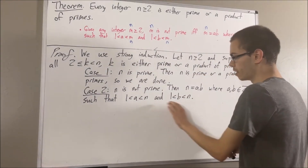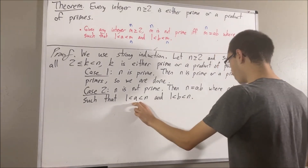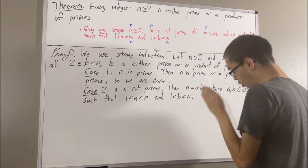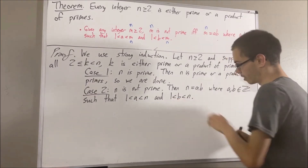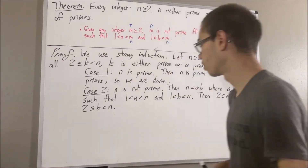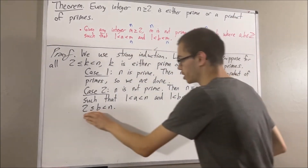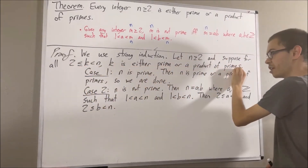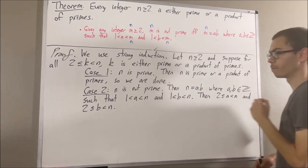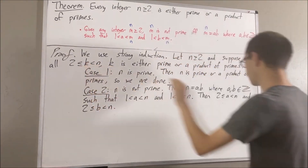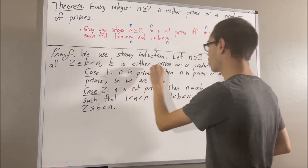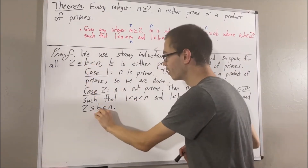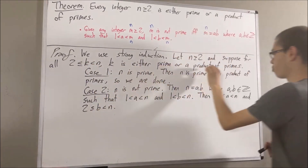Now, since a and b are integers, to say that 1 < a is equivalent to saying 2 ≤ a. Similarly, 1 < b is equivalent to saying 2 ≤ b. Since these two inequalities are true, we can apply our induction hypothesis to a and b. Taking k to be a, we have that a is either prime or a product of primes. And taking k to be b, we have that b is either prime or a product of primes.